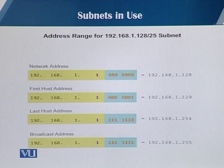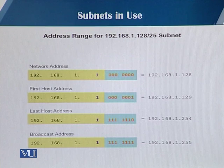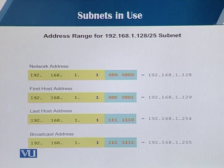For the second subnet, 192.168.1.128/25, the network address is 192.168.1.128, the first host address is .129, the last host address is .254, and the broadcast address is .255 — all ones in the last 7 bits, with the one bit from the subnet ID making it .255.